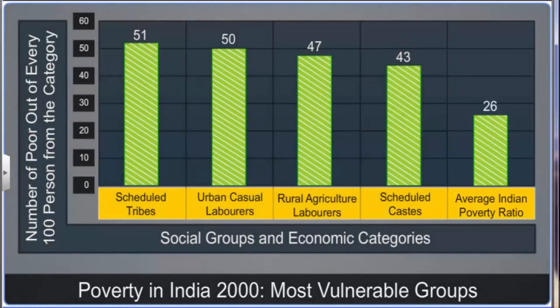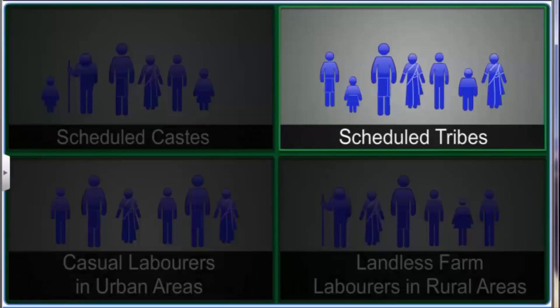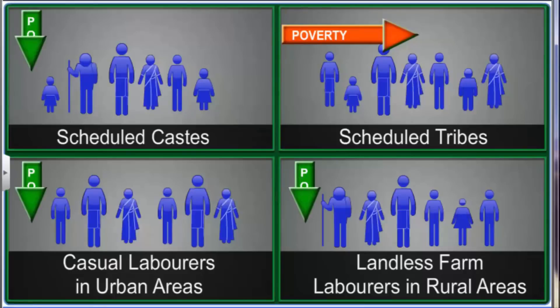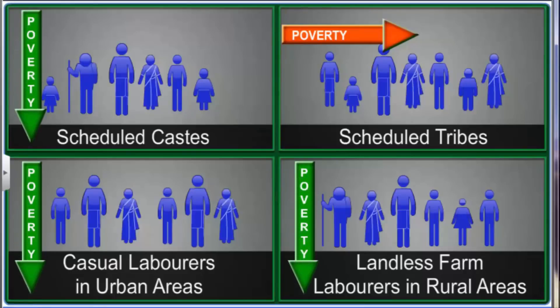The situation is worse for people belonging to more than one of these most vulnerable groups. For example, a landless farm laborer who belongs to a scheduled tribe is usually poorer than other farm laborers belonging to higher castes. The scheduled tribes continue to be the most vulnerable group as studies show no decline in their poverty. The other three groups, however, have shown some decline in poverty in the last decade.